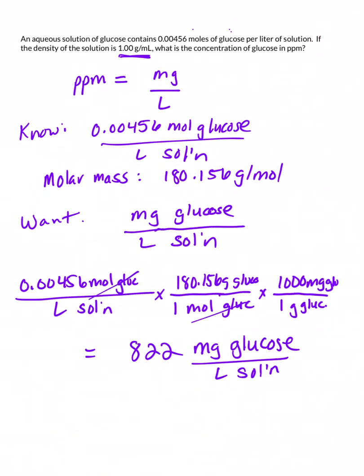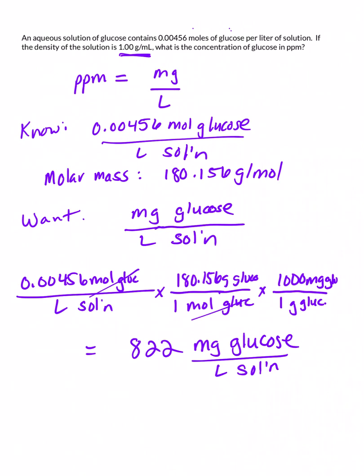And again, because our density is 1 gram per milliliter, the units on parts per million are milligrams per liter. Those are equivalent. And so, we have 822 ppm.